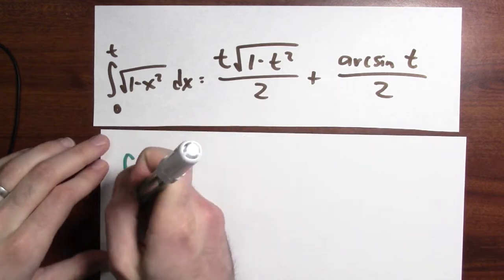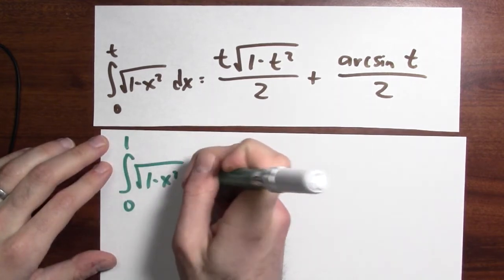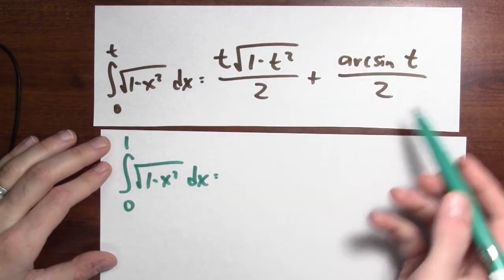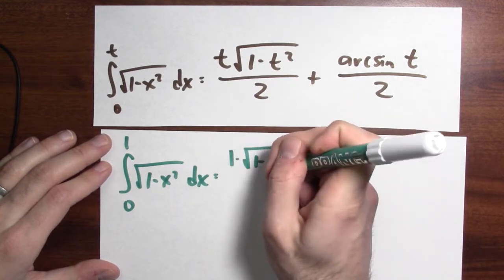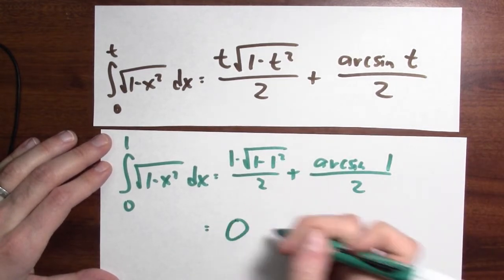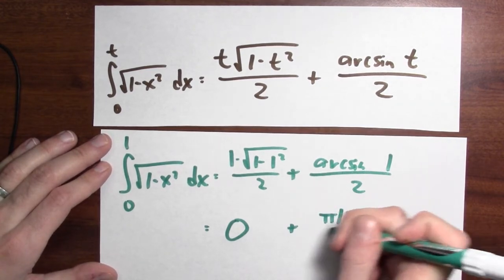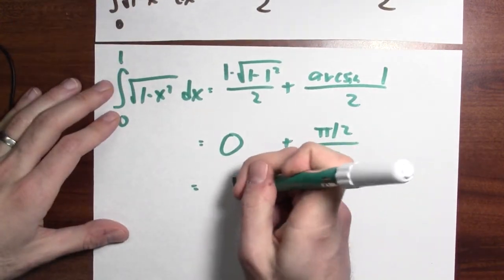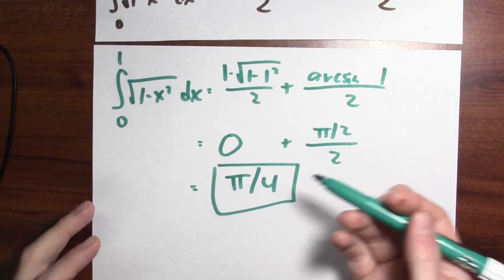What happens if we evaluate the accumulation function at 1? We're calculating the integral from 0 to 1 of the square root of 1 minus x squared dx. Plugging in t equals 1: 1 times the square root of 1 minus 1 squared over 2 is 0, plus arc sine of 1 over 2. That term is 0, and arc sine of 1 is pi over 2, so we get pi over 2 divided by 2, which is pi over 4 — the area of a quarter circle. We can compute the accumulation function by pure geometry and trigonometry, verify its derivative really is the square root of 1 minus x squared, and recover the area of a semicircle. No mathematical fact is an island.